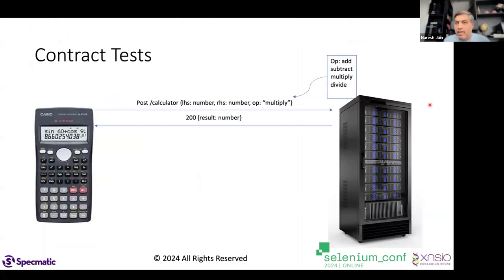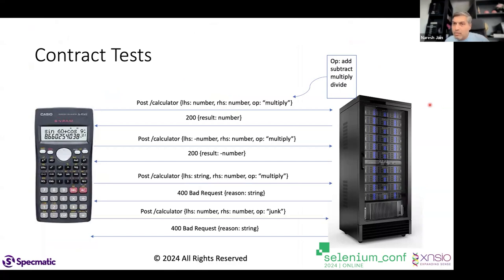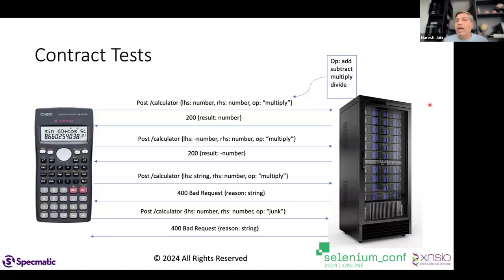Once you have this contract, many of the tests — like sending valid numbers and an enum operation expecting a 200 result — can be generated automatically. From a resiliency and contract testing point of view, much of this can be taken care of without manually writing everything. This feedback is shifted left to developers who can get it right away in their IDE.